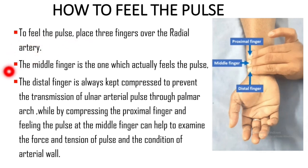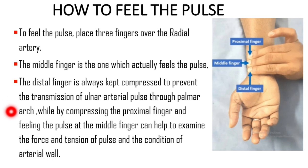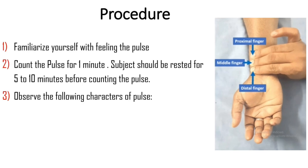The middle finger is the one which actually feels the pulse. The distal finger is always kept compressed to prevent the transmission of the ulnar arterial pulse over the palmar arch. By compressing the proximal finger and feeling the pulse at the middle finger, you can examine the force and tension of the pulse and the condition of the arterial wall. Now we have learned how to feel the pulse.